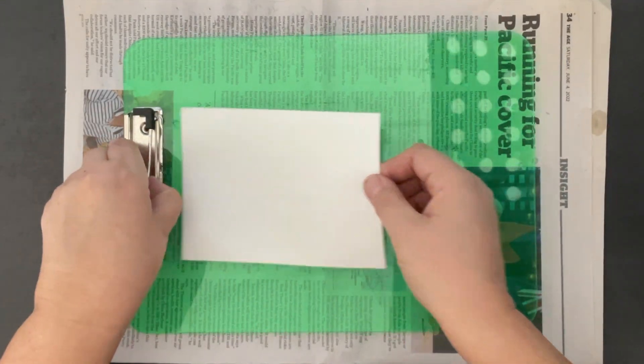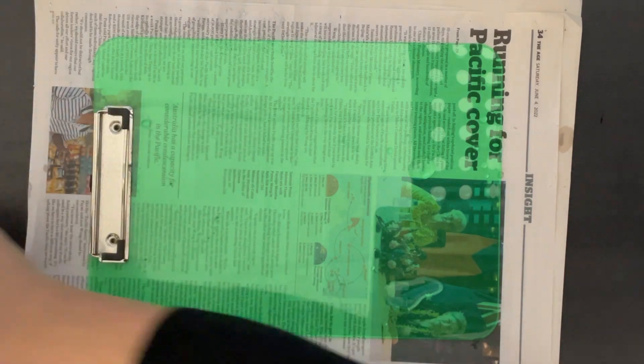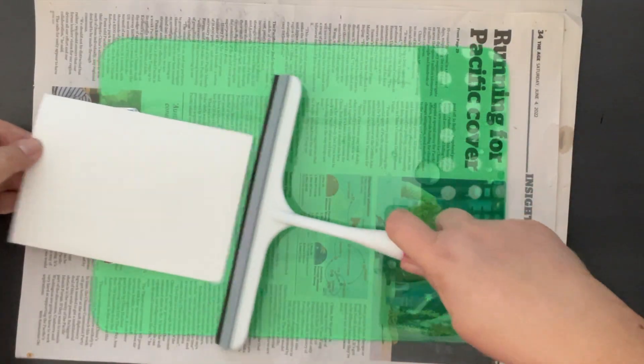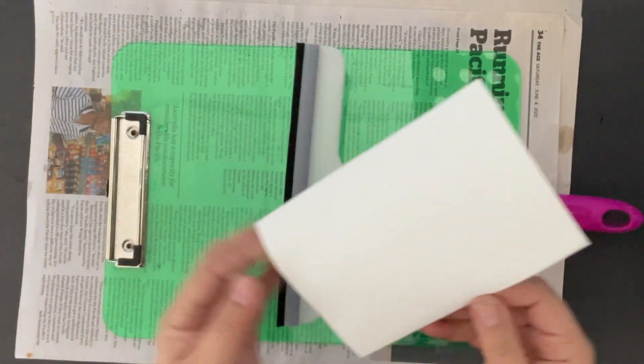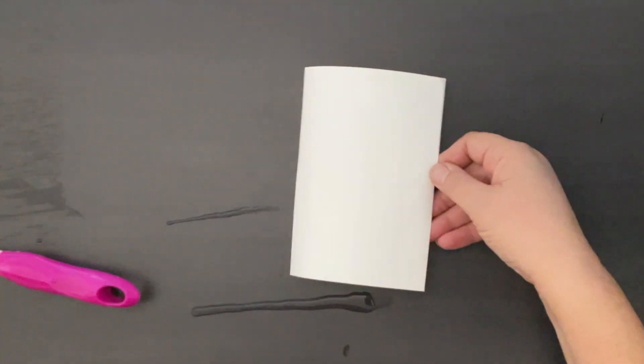Alright, now our paper is a little bit wet. It's not too wet. I'm going to flip it over and just do this side. I'm going to put that to one side and I've got damp paper now.